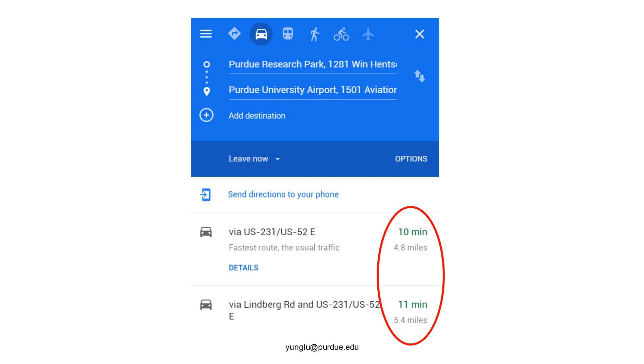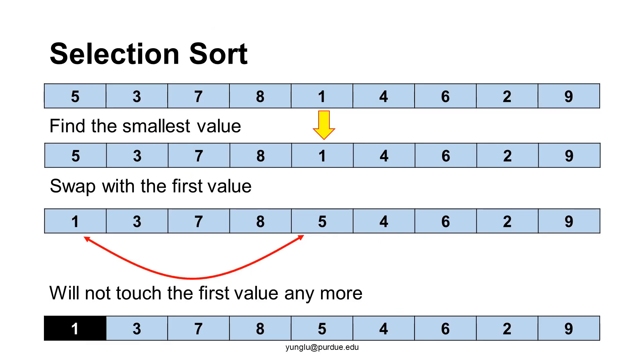The first route travels 4.8 miles and the second route travels 5.4 miles. The next few slides explain selection sort.